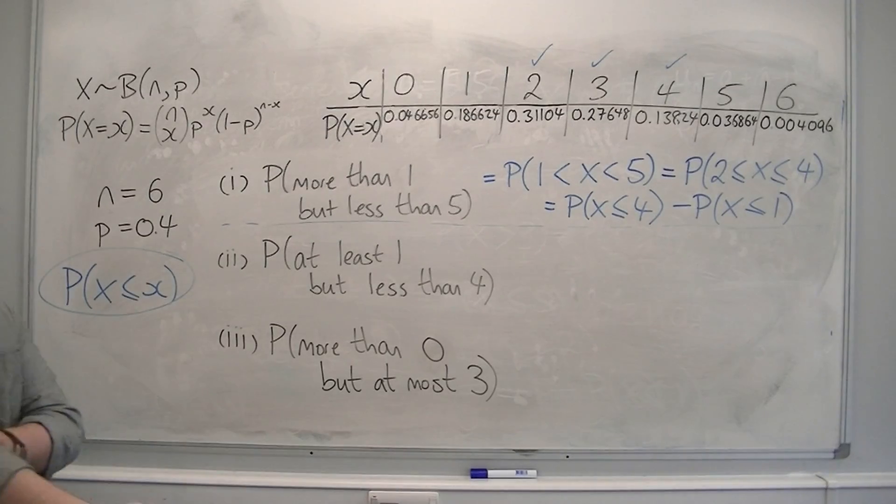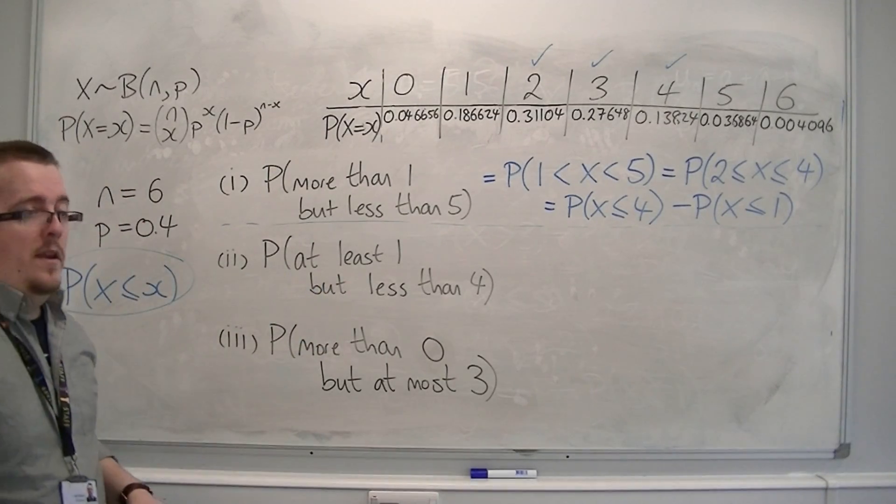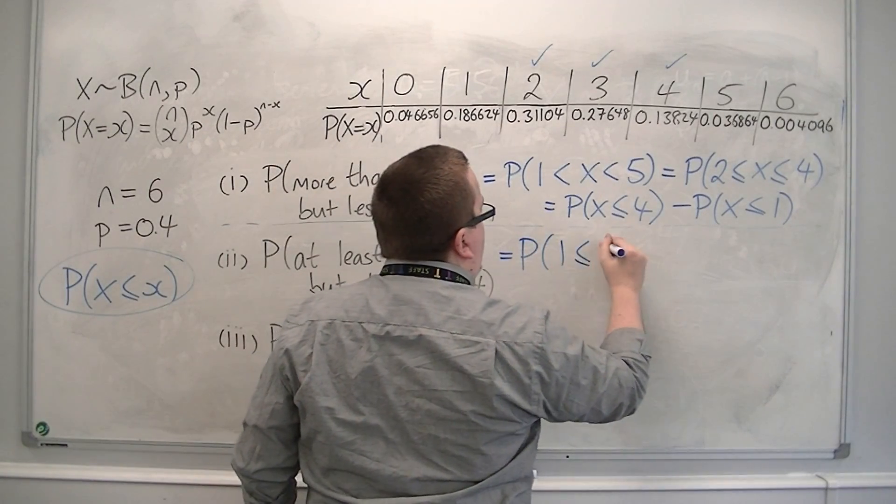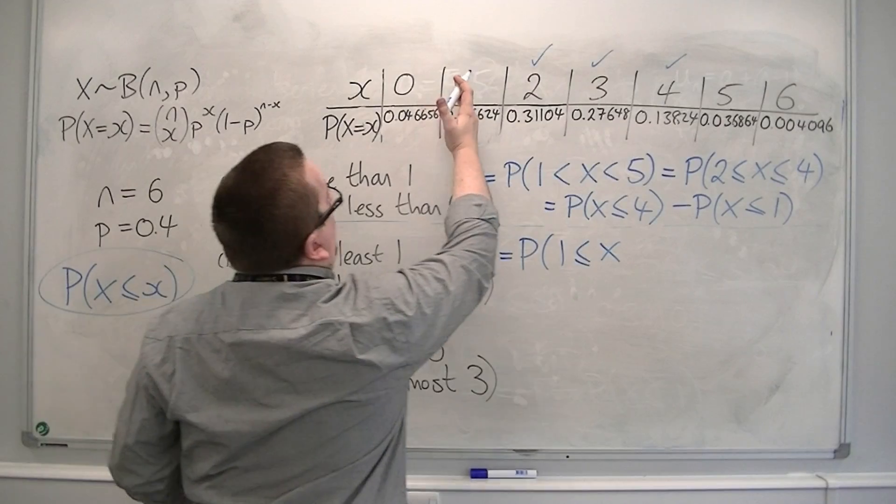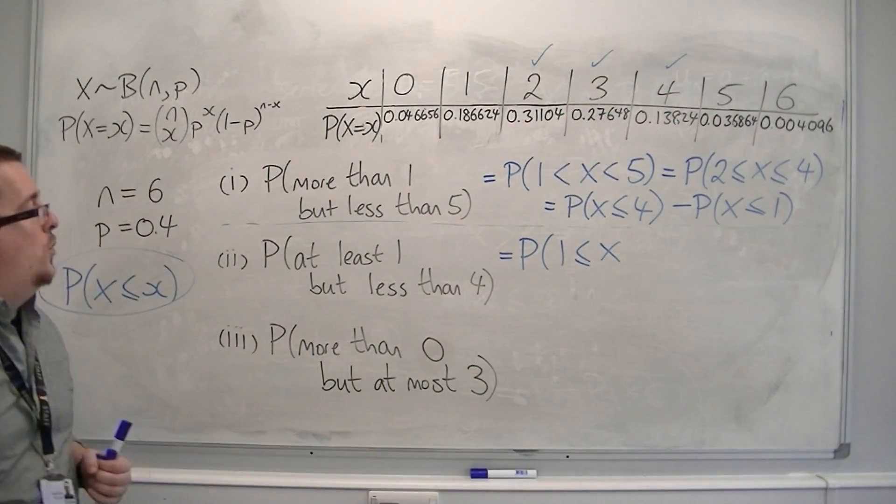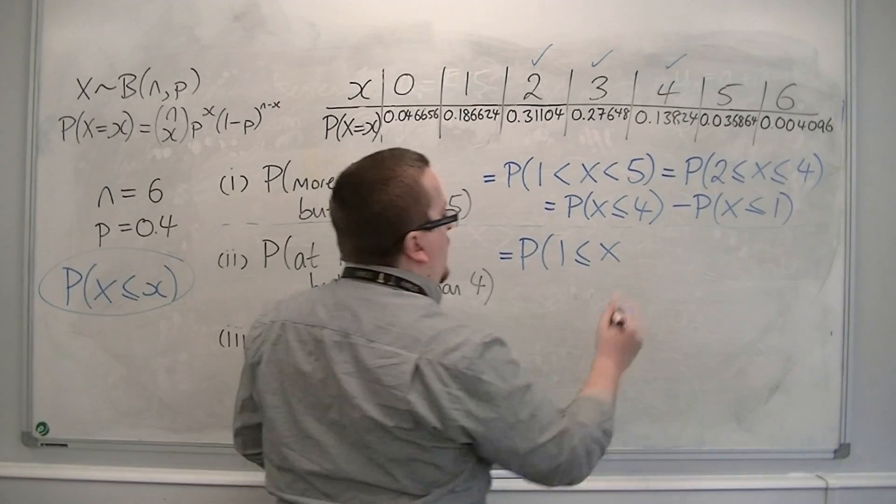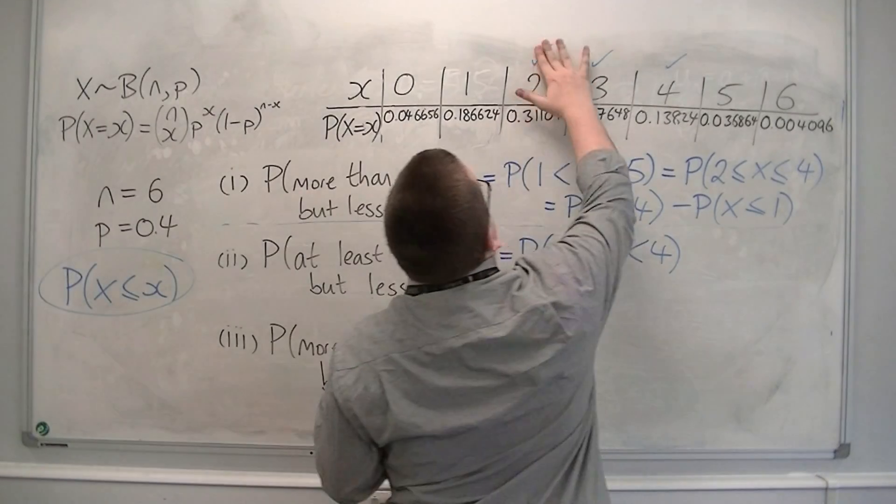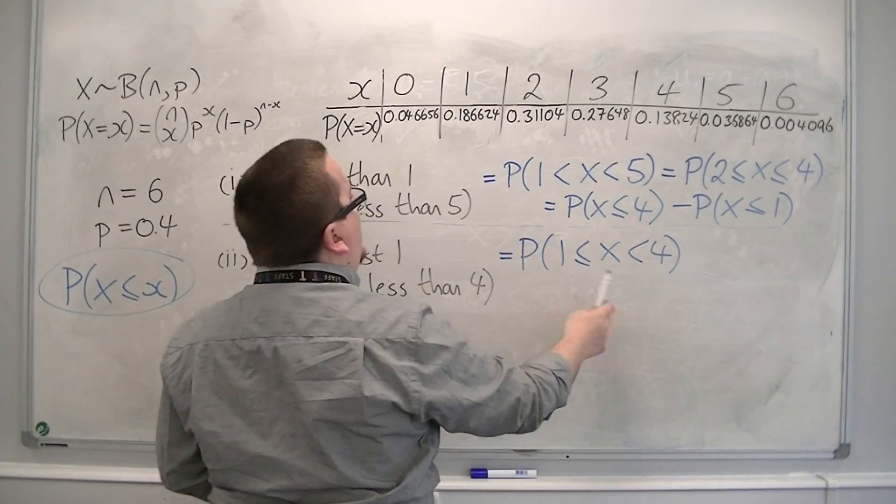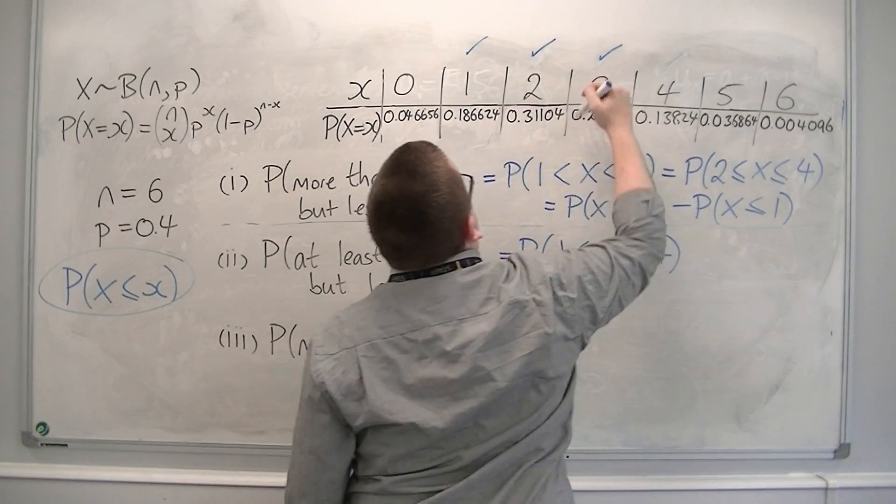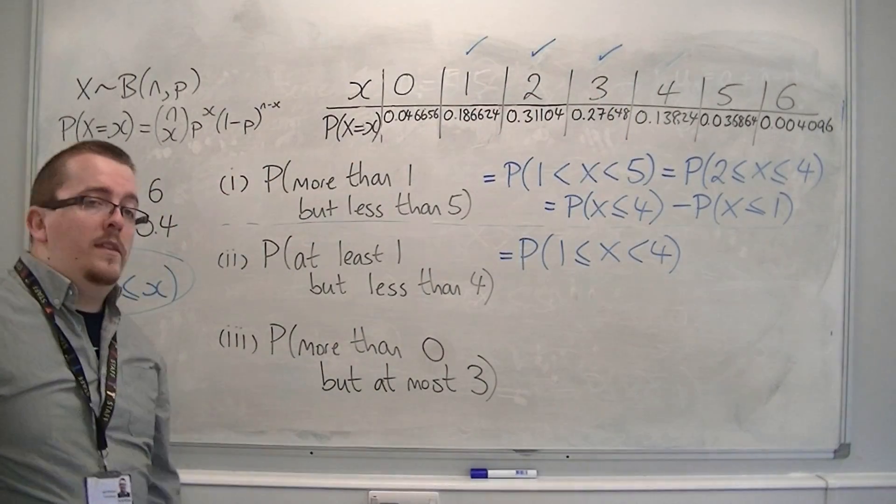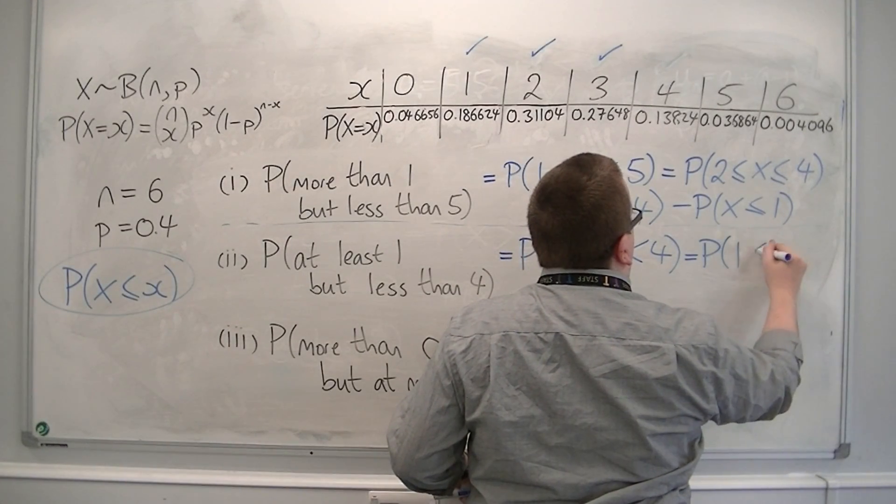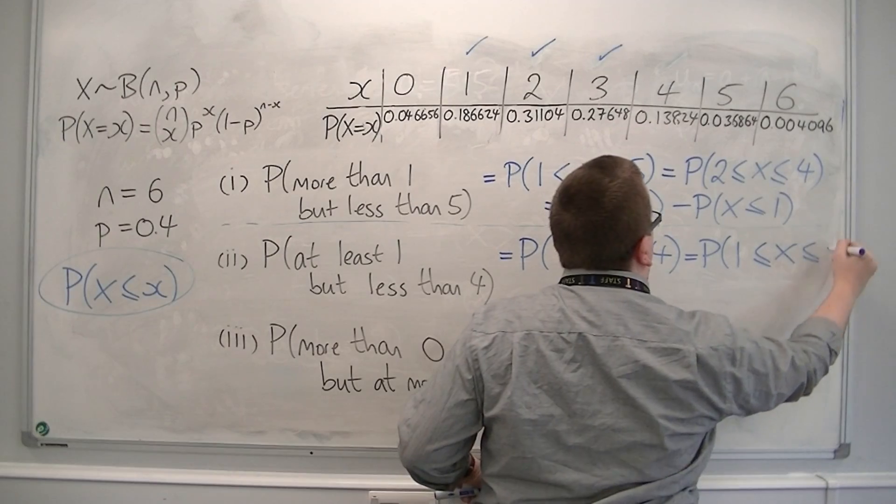Let's look at the second one. The probability of at least one but less than four. So I want at least one, so x can be equal to one or greater than it. I want at least one but strictly less than four, so it's got to be less than four. So if it's greater than or equal to one but less than four, I'm looking at those three there. So that is equal to the probability of x being between one and three inclusive.